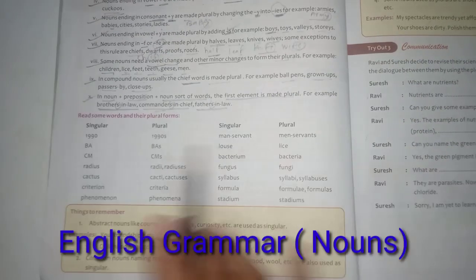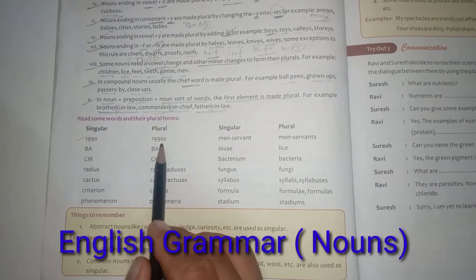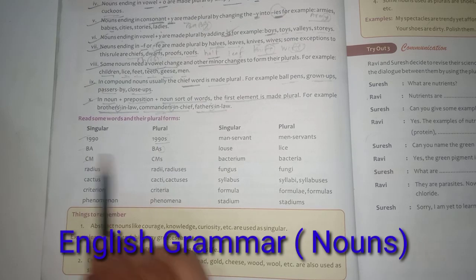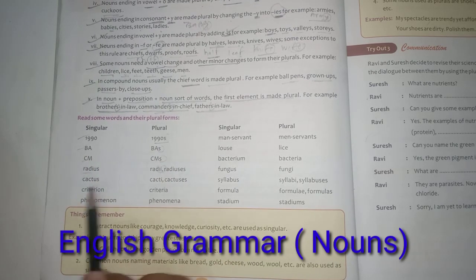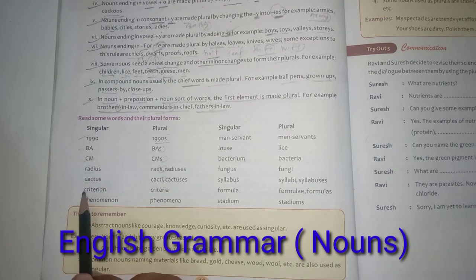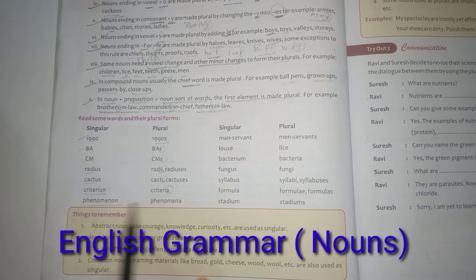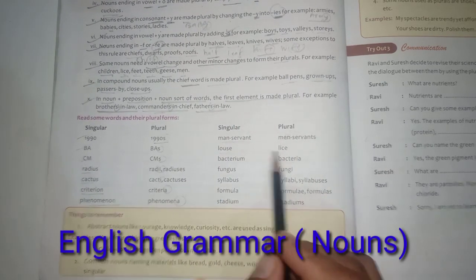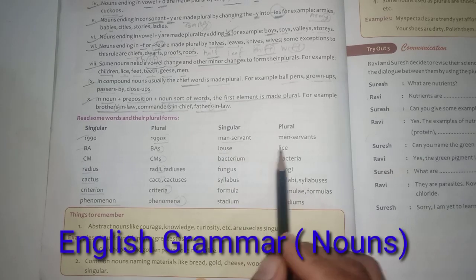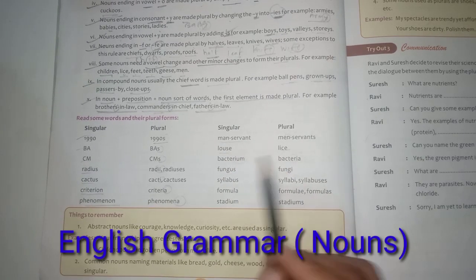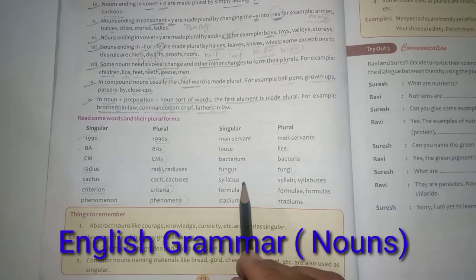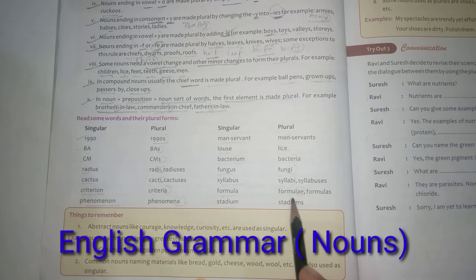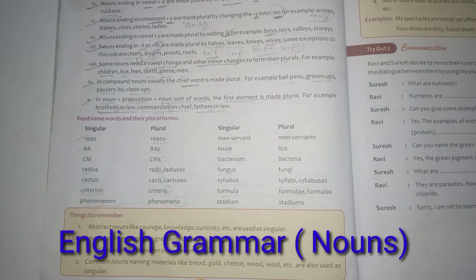Some irregular plural forms to remember: radius → radii, cactus → cacti, criterion → criteria, phenomenon → phenomena, manservant → menservants, louse → lice, bacterium → bacteria, fungus → fungi, syllabus → syllabi, formula → formulae, stadium → stadiums.